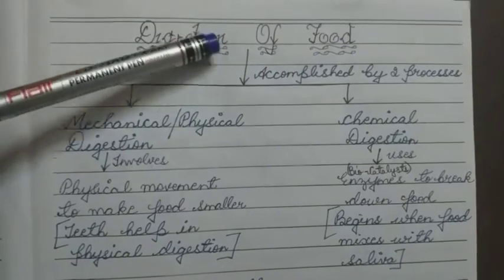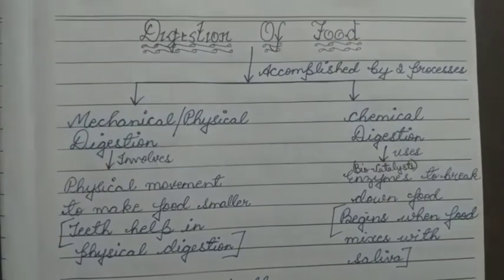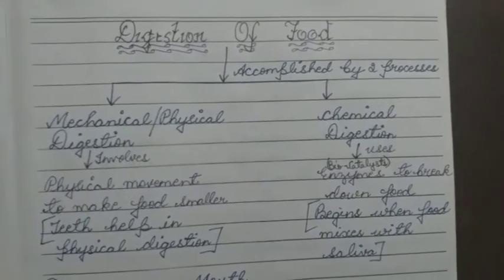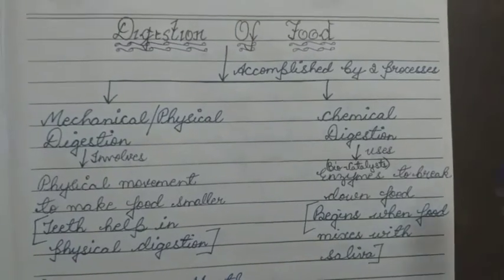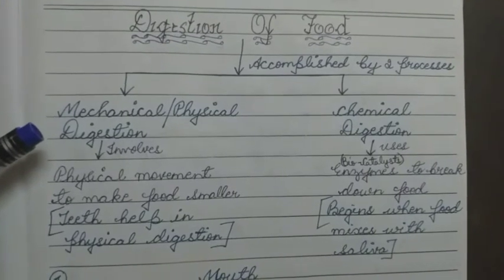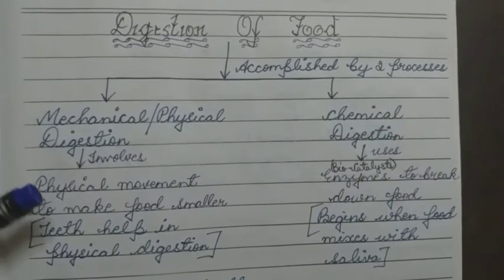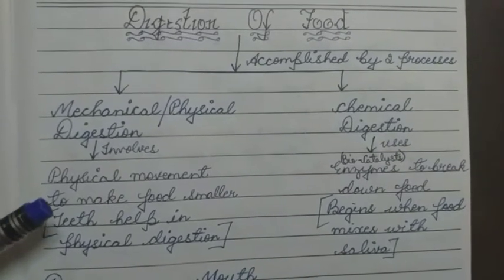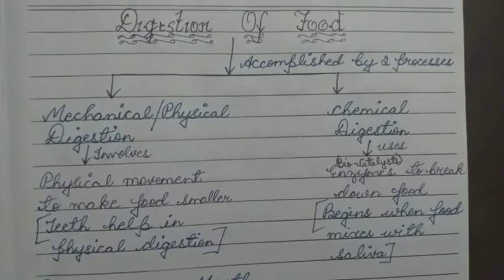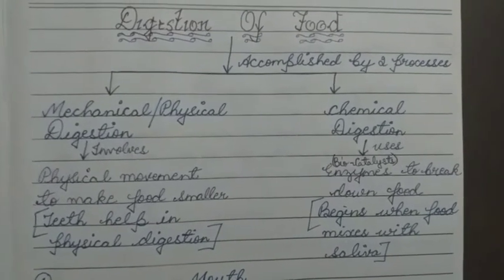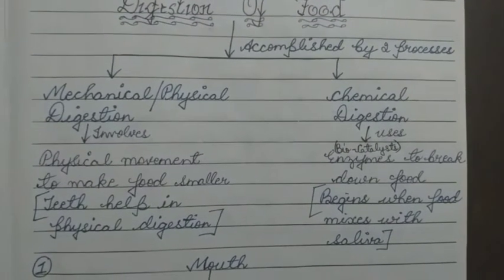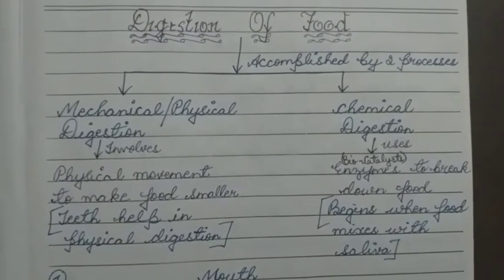The digestion of food is accomplished by two processes. Number one is mechanical (also called physical) digestion, and number two is chemical digestion. Mechanical digestion involves teeth, which help break food down into smaller pieces. Chemical digestion is a kind of digestion in which enzymes are used to break our food into smaller pieces.